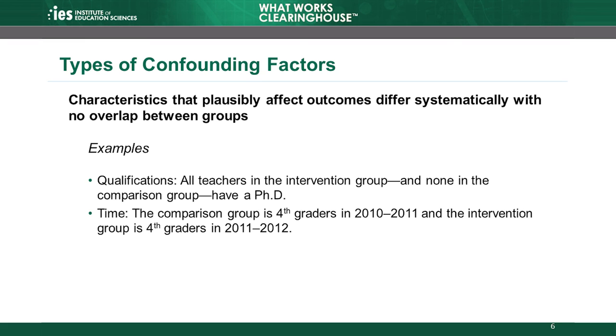Another example of this type of confounding factor occurs when the comparison group consists of students who were in the same grade as the intervention group, but at a different point in time. For example, suppose the intervention group consists of students who were fourth graders in the 2011–2012 school year, and the comparison group consists of students who were fourth graders in the 2010–2011 school year. In this example, time is a confounding factor, as the groups are observed in different school years. The intervention and comparison conditions align completely with different time periods, and it is possible that something changed between the time periods — such as a change in school leadership or a new policy — that could cause differences between the groups. We can't determine whether any observed difference is due to the intervention, to something else that changed over time, or to both.